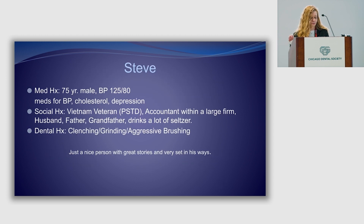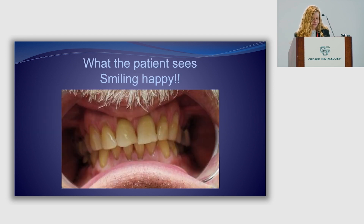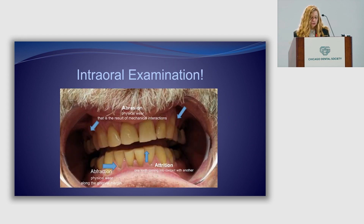Let's check out our first case study, Siv. He had four wisdom teeth pulled with no anesthesia when joining the army. He's 75 years of age with a blood pressure of 125 over 80, on regular meds for blood pressure, cholesterol, and depression. He's a Vietnam vet, an accountant, husband, father, grandfather, and loves to drink seltzer water. He likes his smile but only with the mustache because it hides things — he brushes and goes on his merry way. When we conduct our clinical exam, we see abrasion on the posterior teeth, attrition on the occlusal surfaces, and abfraction along the gingival margin.